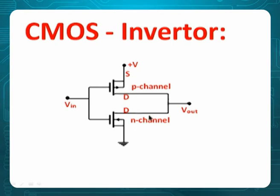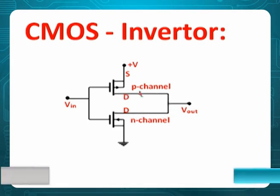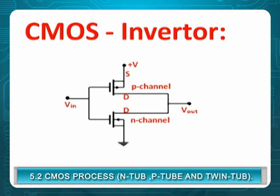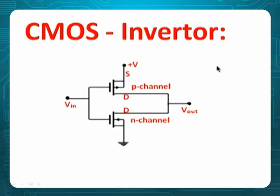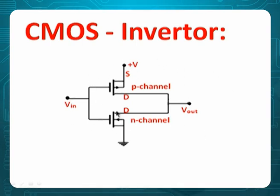In the CMOS circuit, P-channel is on top and N-channel is on the bottom. The drains of both are connected, creating many interconnections that reduce overall size. With input Vi and output V-not, a truth table shows this acts as an inverter. When one transistor is on, the other is off, so the net effective current flowing is always zero. Therefore, overall current is zero and power dissipation is zero — CMOS has the least or zero static power dissipation.